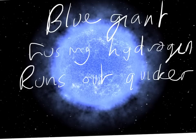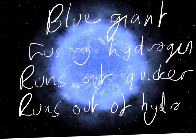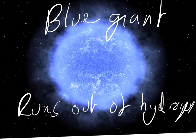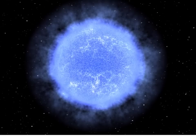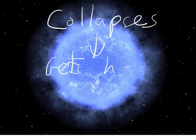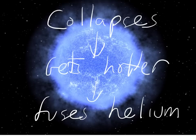At the end of the blue giant's life, it runs out of hydrogen in the same way as a main sequence star — gravity wins and the star collapses. But when it collapses in on itself, it also starts fusing helium again. The star swells up, cools down, and becomes a red giant. But because it was already a blue giant, it increases even further in size and becomes a red supergiant.